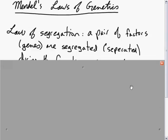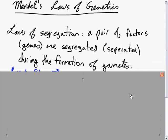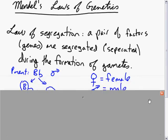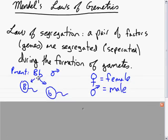To finish off this review video, just to review the laws of genetics that Mendel discovered: the first one was the law of segregation, in which a pair of factors, which we now call genes, are segregated or separated during the formation of gametes—gametes being the sperm or the egg.